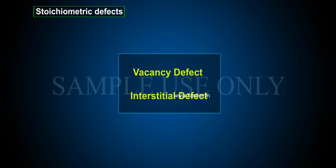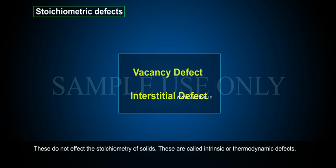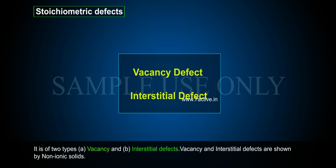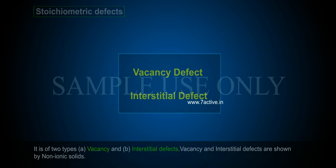Stoichiometric defects include vacancy defects and interstitial defects. These do not affect the stoichiometry of solids and are called intrinsic or thermodynamic defects. Vacancy and interstitial defects are shown by non-ionic solids.